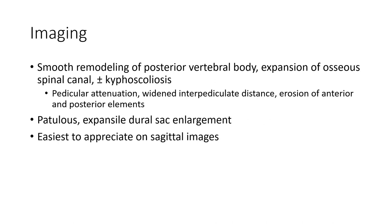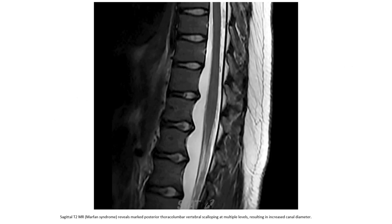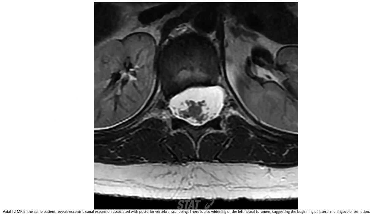This CT of a patient with Marfan syndrome reveals mild posterior thoracolumbar vertebral scalloping at multiple levels, resulting in increased canal diameter. Another CT in the same patient reveals eccentric canal expansion associated with posterior vertebral scalloping. Also noted is widening of the left neural foramen, suggesting the beginning of lateral meningocele formation.